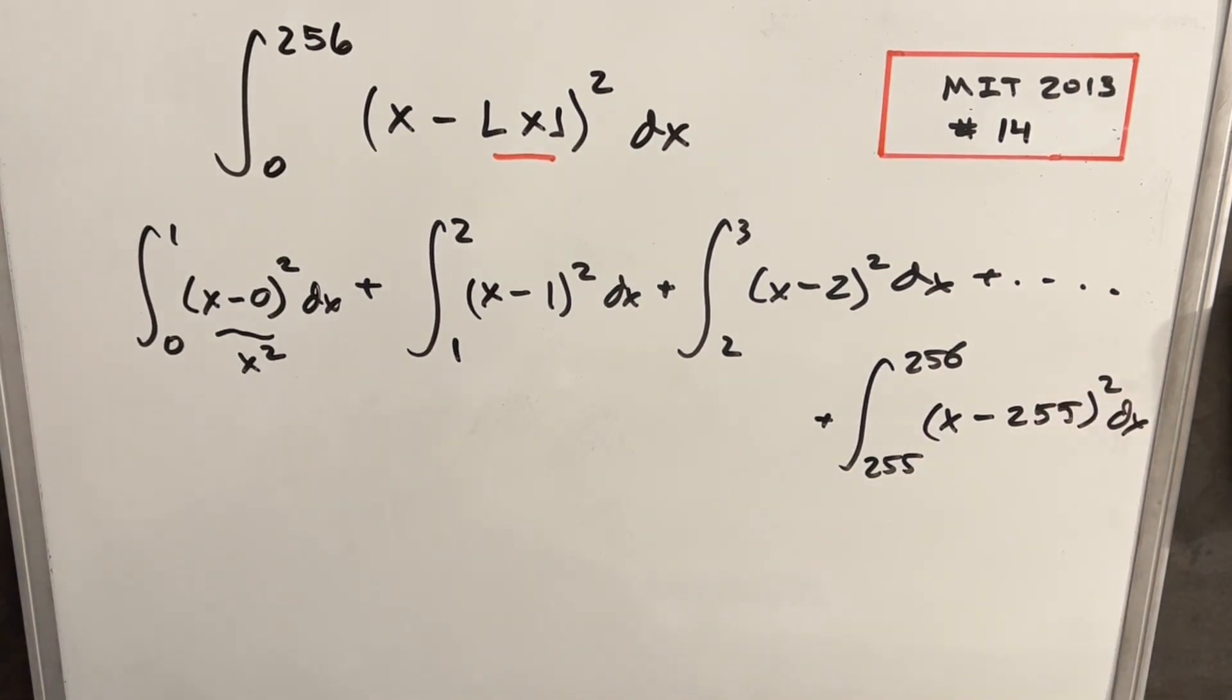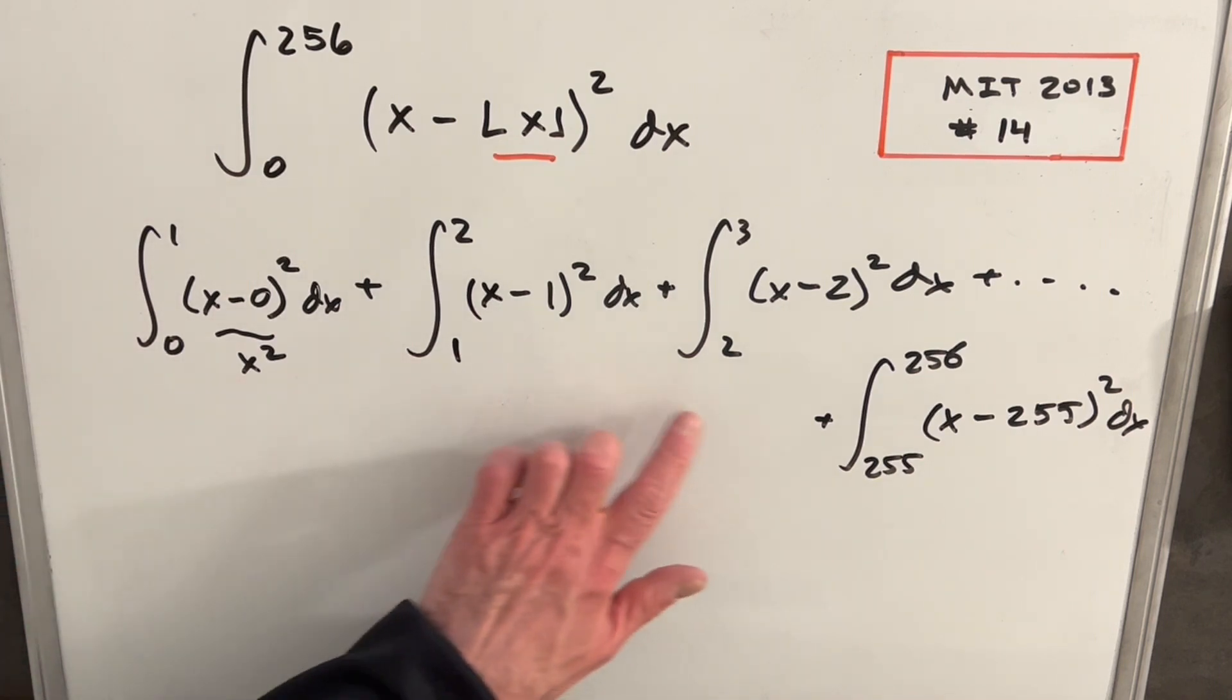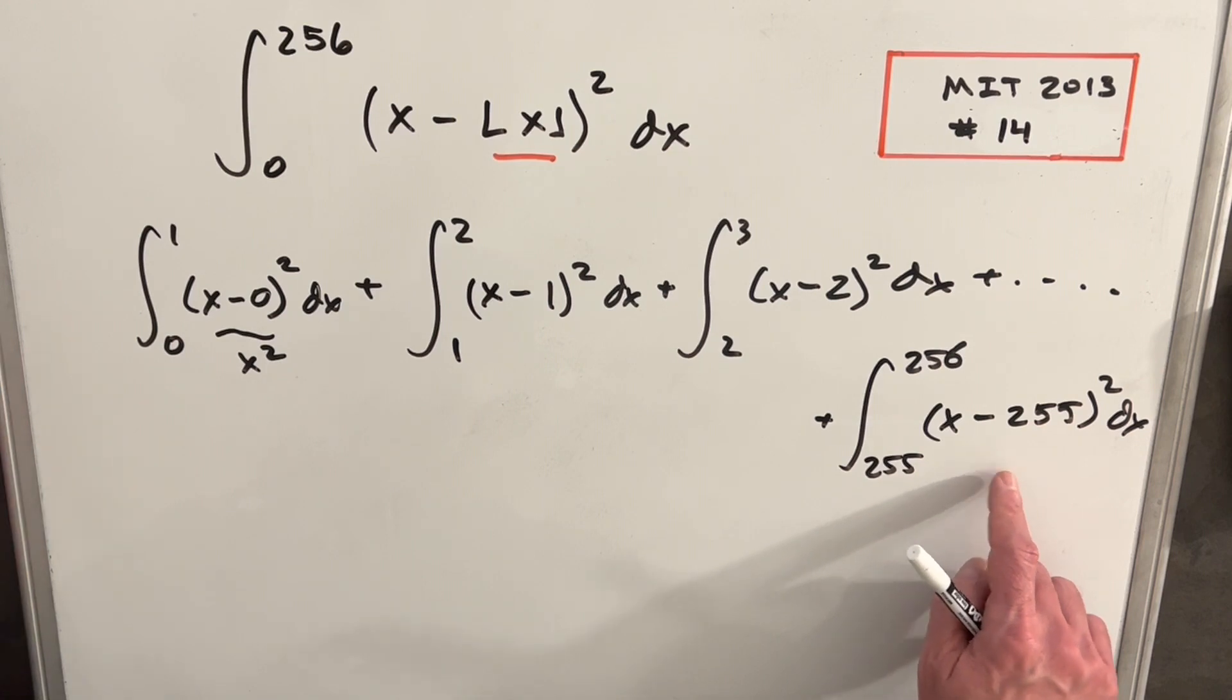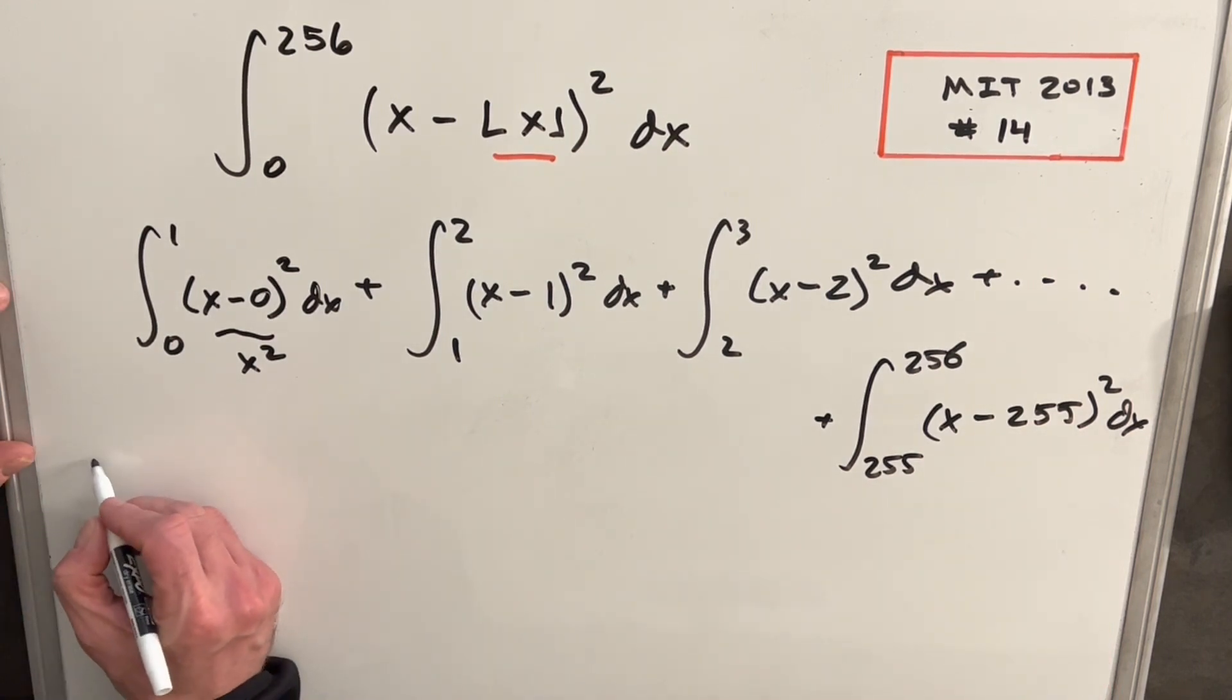Basically, what I have now is all these integrals taken individually are fine. These are all easy. Even this one, if I do a u substitution, it's just big numbers. It's not really a problem.